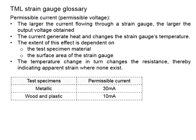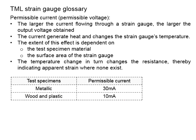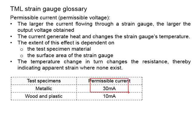There is a limit in terms of current known as the permissible current. The extent of this effect is governed by the type of material of your test specimen. For metallic materials, the permissible current will be 30 mA. As for wood and plastic, the permissible current will be 10 mA. The difference is likely due to the ability of the test specimen to disperse heat — if heat can be dispersed quickly, a higher permissible current is allowed.